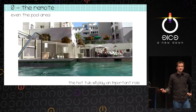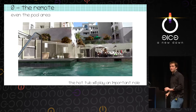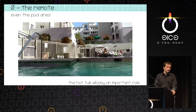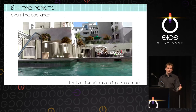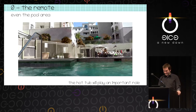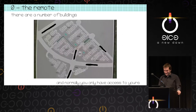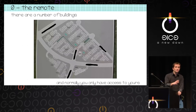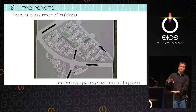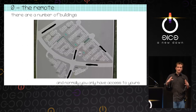You have the remote, you can access the pool, and the hot tub plays a very important part in the reason why I looked at this — simply because there is this gate. You can jump over it, but it's a lot more fun to hack it, isn't it? They provide you one remote, which is only for one part of the building — you shouldn't have access to the other buildings. This facility complex has a lot of buildings.